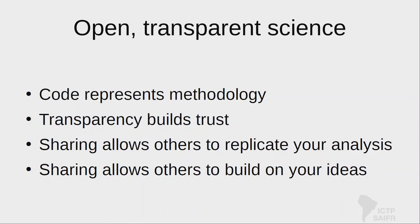There is a reproduction crisis in science across the board, including ecology. There are two terms: replication and reproduction. To replicate, in the code context, means taking the code someone made, running it, and checking if you get the same result. Whereas reproduction would be: how do I write the code in the same way that you wrote it and get the same result?